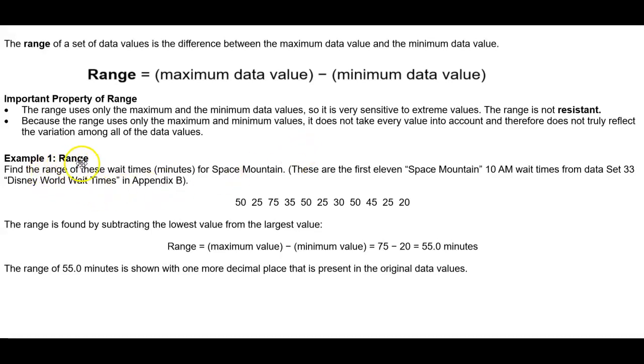So for example one, the range. Find the range of these wait times in minutes for Space Mountain. These are the first 11 Space Mountain 10 a.m. wait times from the data set 33 Disney World wait times in Appendix B.